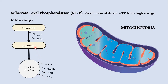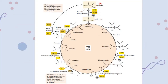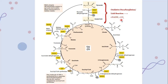Before starting the Krebs cycle, there is a link reaction, which is basically an oxidative decarboxylation reaction. In this reaction, one NADH and one carbon dioxide are produced from one molecule of pyruvate. For two molecules of pyruvate, two NADH and two carbon dioxide molecules are produced. The three-carbon pyruvate molecule is converted into a two-carbon acetate by releasing carbon dioxide, and NAD⁺ is reduced to NADH.